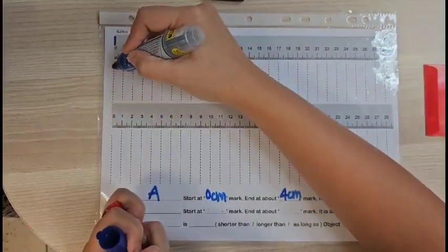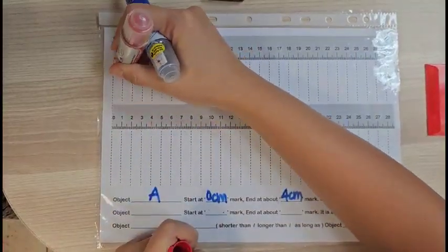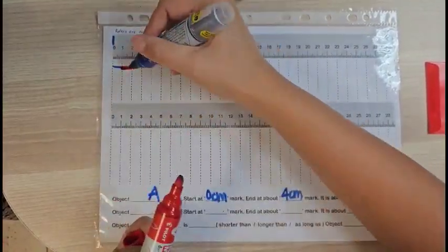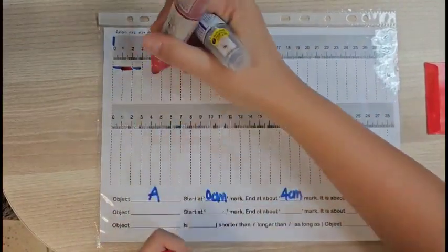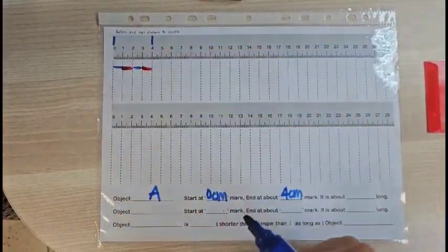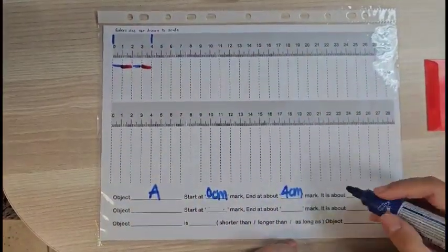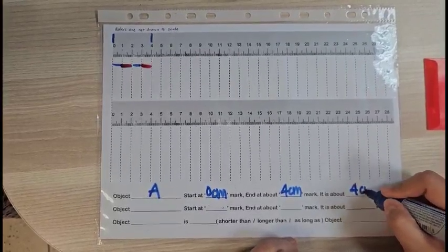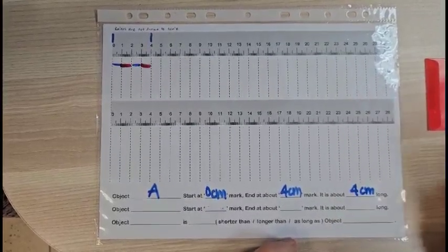So I have 1 space, 2 spaces, 3 spaces, 4 spaces. Therefore, it is about 4 cm long.